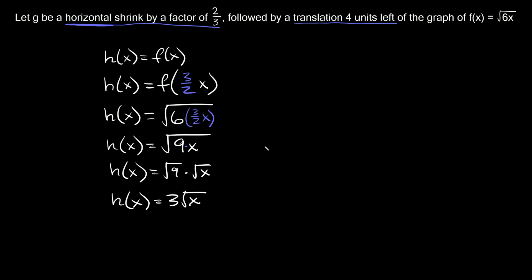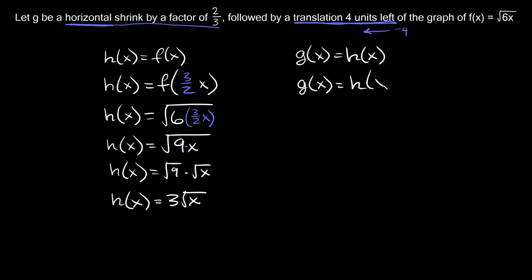Now for the second transformation — a translation four units left. Moving four units to the left, we put the opposite sign inside the parentheses, so plus four. So g of x equals h of x plus four. Bringing in h of x, wherever we have a single x we replace it with x plus four. So g of x equals three times the square root of x plus four. There's nothing left to simplify, so this is the final answer.